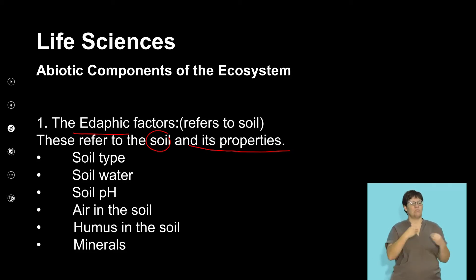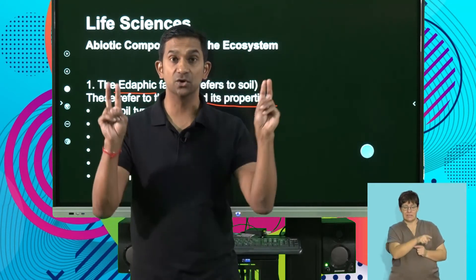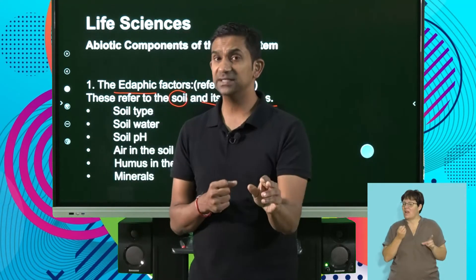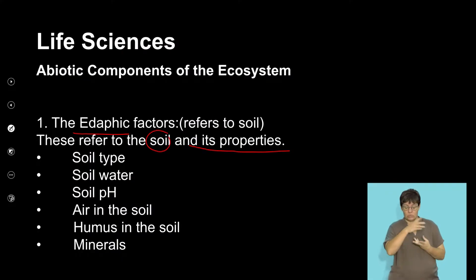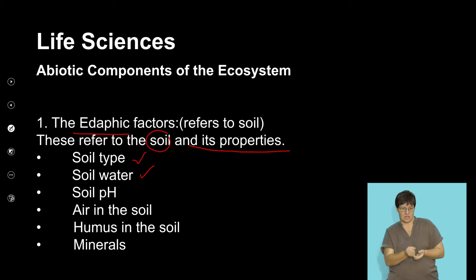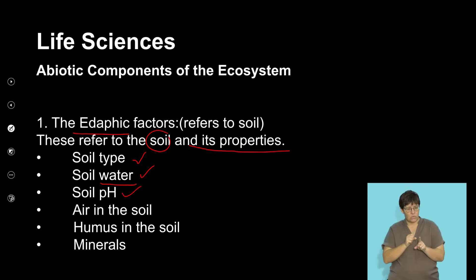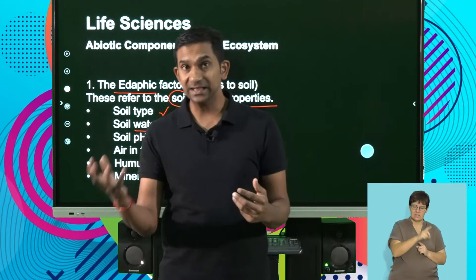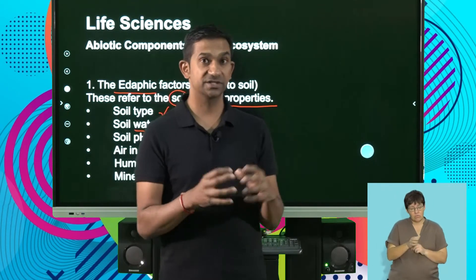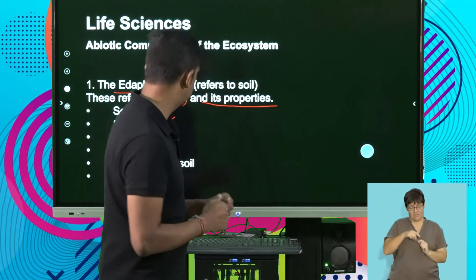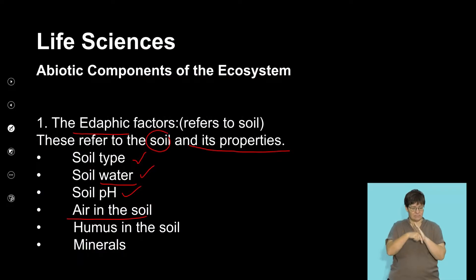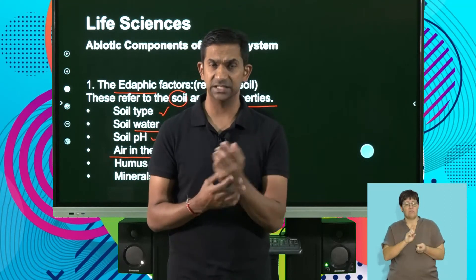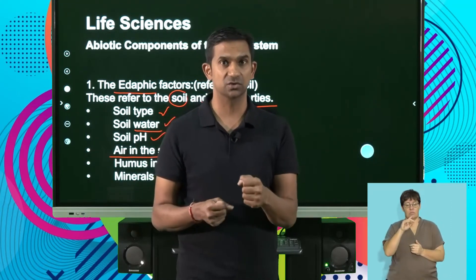Let's look at the edaphic factors — these are factors that refer to soil and its properties. The abiotic factors are the non-living components, but they play a significant influence on how they support life forms. When we look at soil, we know there are different types of soil. Soil has the ability to hold or retain water — we'll look at soil water. Soil is also affected by pH — how acid or alkaline the soil is — which influences the growth of plants and other organisms in that area. We've also got to look at the air content of soil, as plant root systems require oxygen and air for healthy growth.